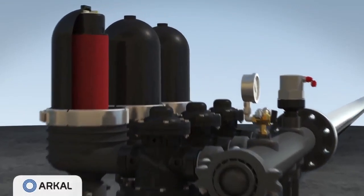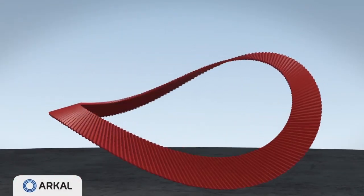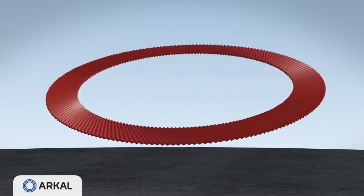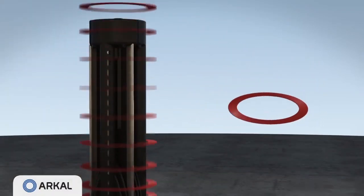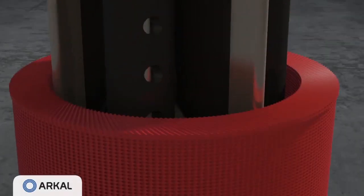Each filter module consists of filter housing with a central spine on which the SpinClean discs are stacked. These thin color-coded groove discs are diagonally grooved on both sides in opposite directions.